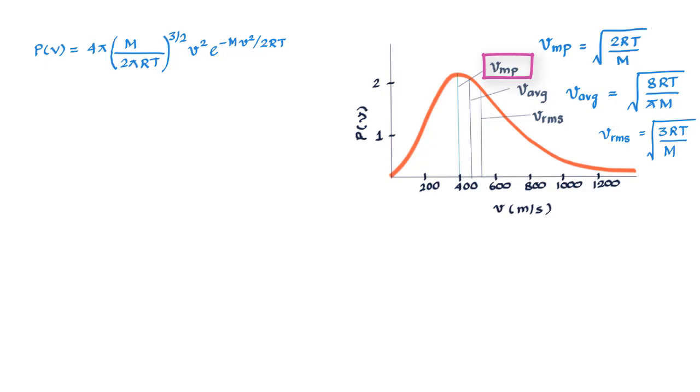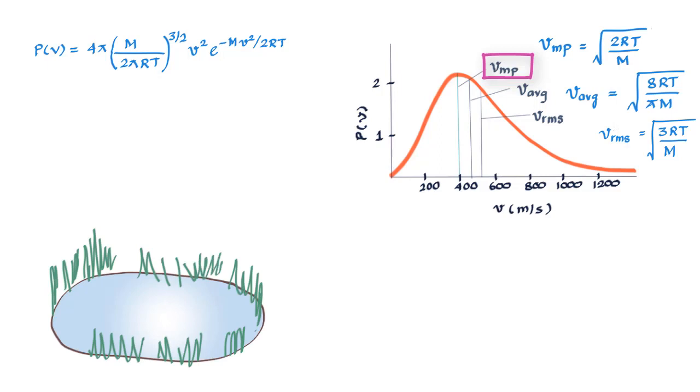So the speed distribution of water molecules in say a pond at summer time temperatures would look quite like this curve. Well with a distribution curve like this, most molecules lack the energy to escape from the surface.